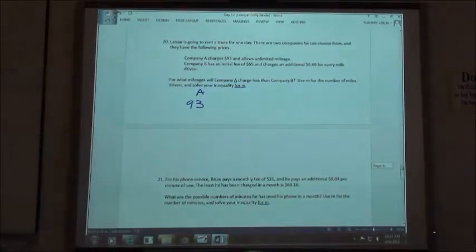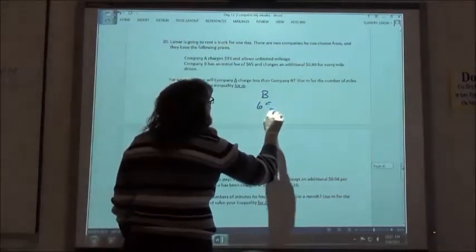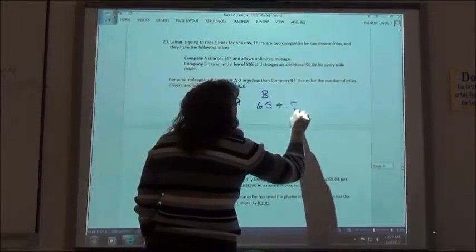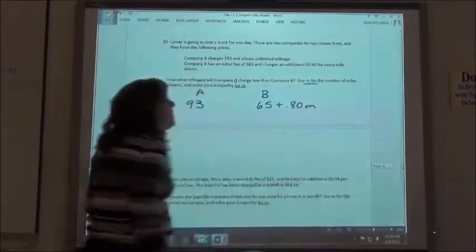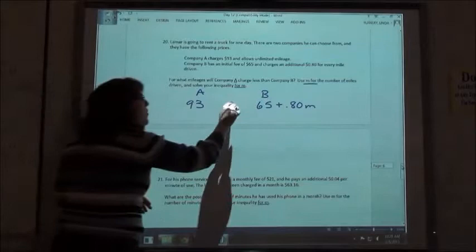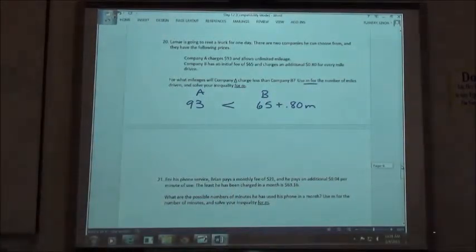It doesn't matter if I drive one mile or 900 miles, I'm going to pay $93. Company B is going to charge me $65 to start with, but I'm going to have to pay an additional $0.80 for every mile driven. And it told me to use M for my miles. We want A to charge less than B, so we want the $93 to be less than the $65 plus $0.80M.